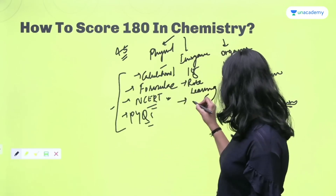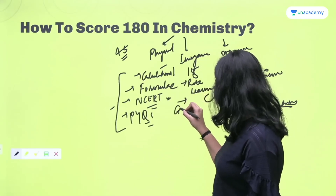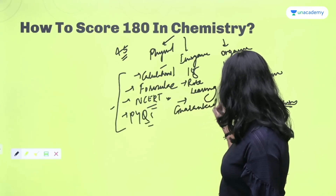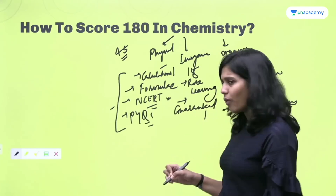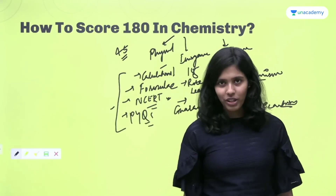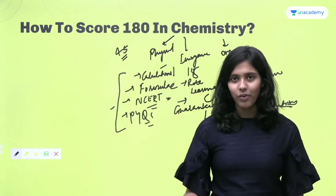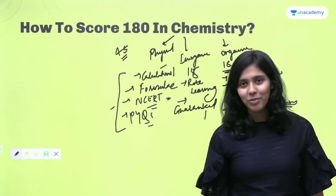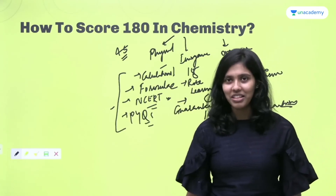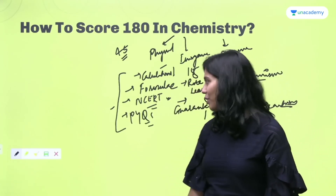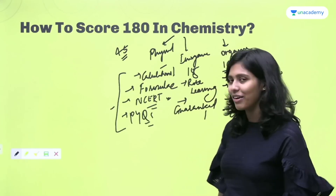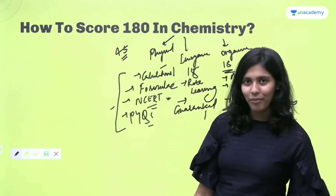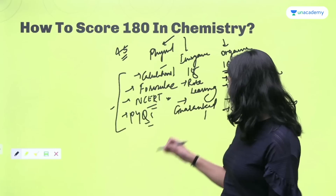Inorganic Chemistry is guaranteed marks. Marks are very much guaranteed. Once you know the answer — there is a question, 4 options, you know the answer — there is no possible way of making a mistake. There are no calculations, no formula, nothing. You just have to remember, that's it.